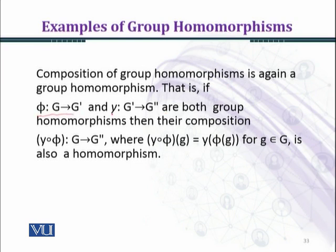That is, if φ from G to G' and ψ from G' to G'' are both group homomorphisms, then their composition ψ compose φ, where composition means first φ will act from G to G', and then ψ will act from G' to G'', so you will have ψ compose φ from G to G''.